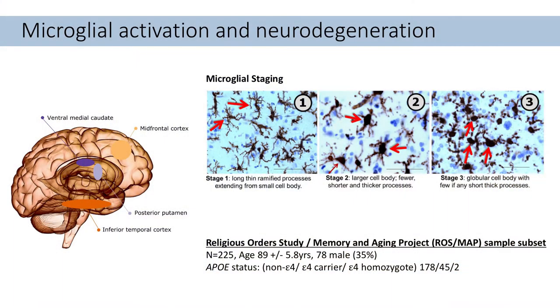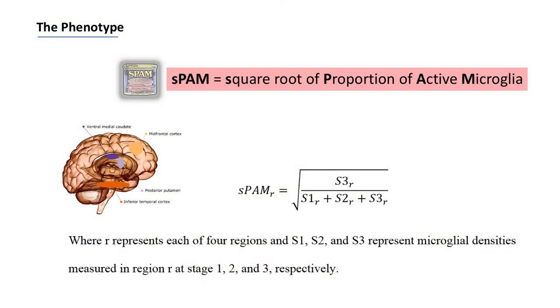This is the dataset: pictures of microglia at different stages of activation. A talented neuropathologist looked at different brain regions in a subset of 225 elderly subjects — average age 89. We characterized the proportion and density of stage one, stage two, and stage three microglia in four brain regions, and I combined them into a phenotype I call SPAM — the square root of the proportion of active microglia.